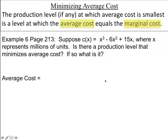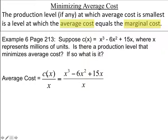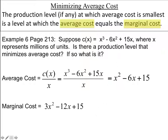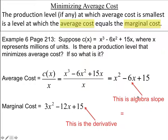Our average cost is our cost divided by our production level x — it's a slope from the origin: (C(x) - 0) / (x - 0), rise over run. The average cost function simplifies to x² - 6x + 15 after factoring out an x. We set that equal to the marginal cost, which is 3x² - 12x + 15. When we set the algebra slope equal to the derivative, we're invoking the mean value theorem.